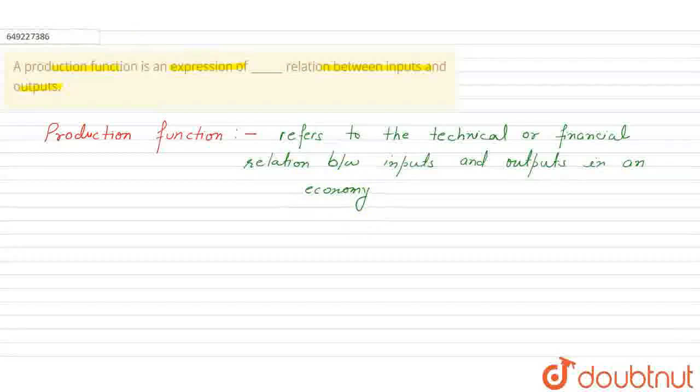Production function tells you how much you need to produce at different levels. So how much output you need in an economy at a certain level.